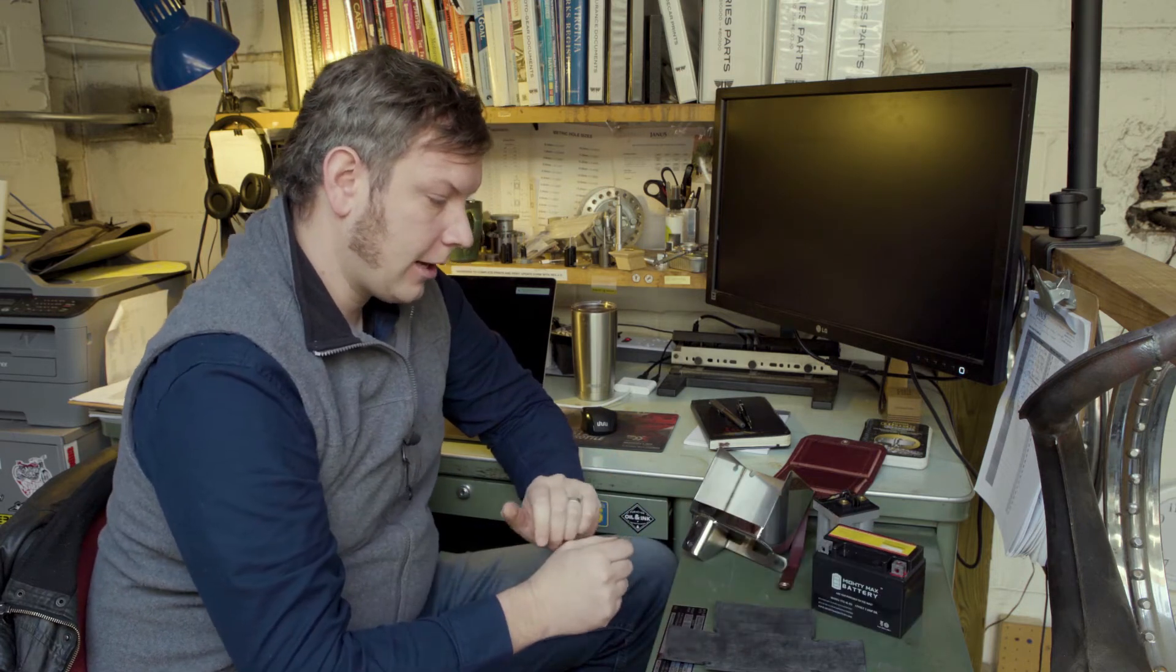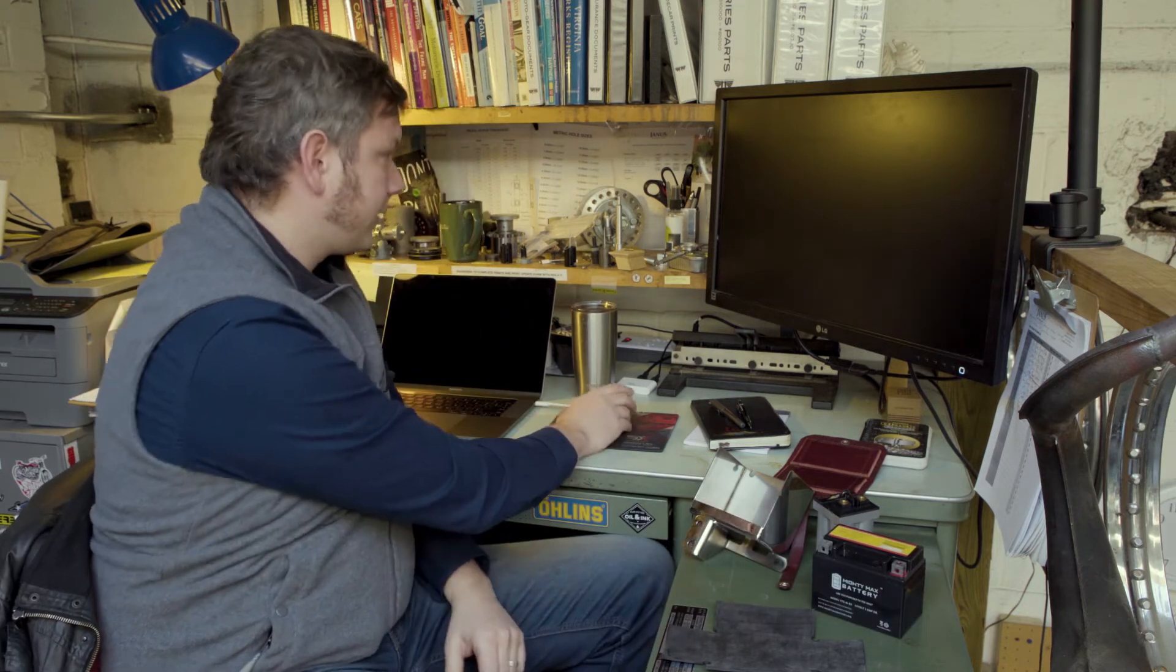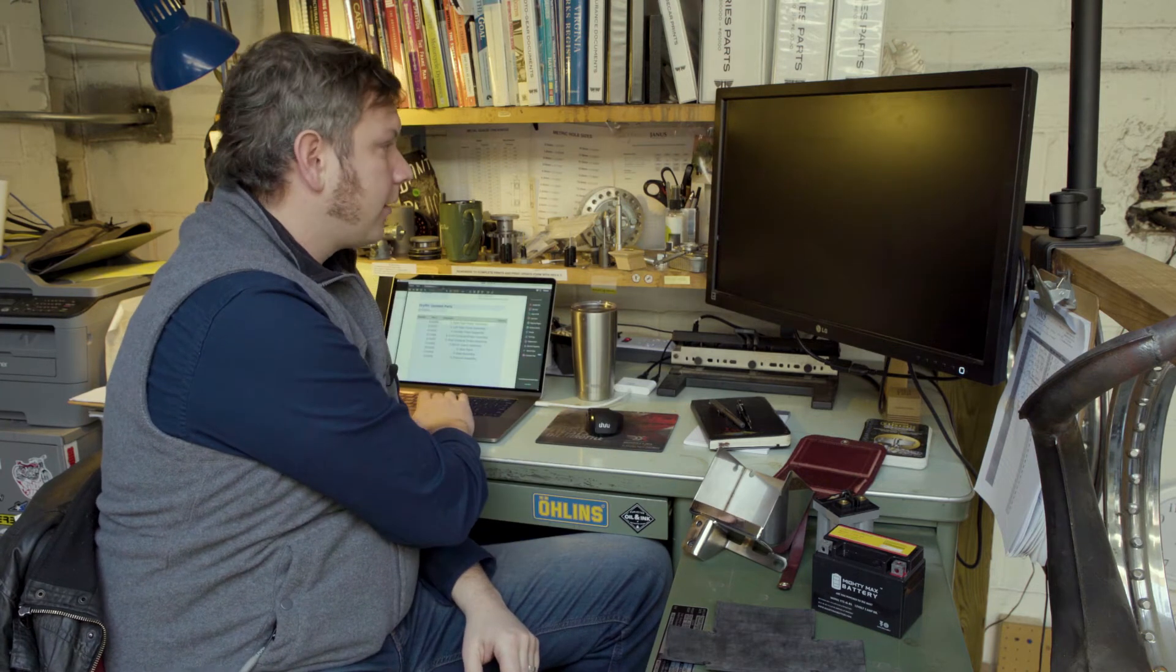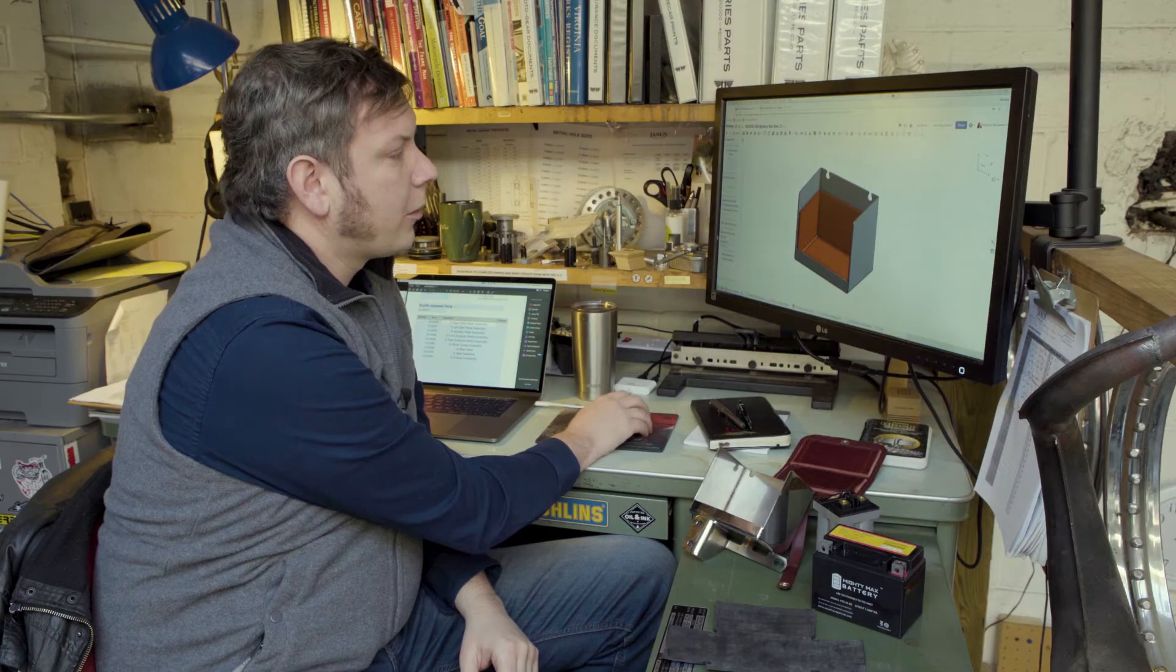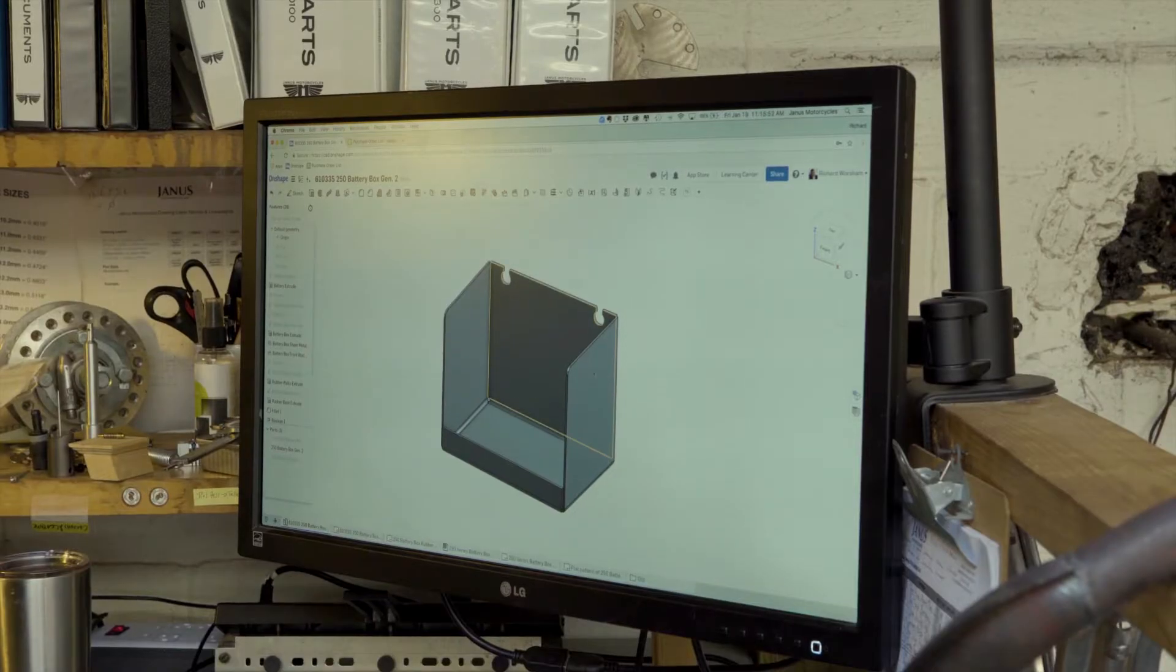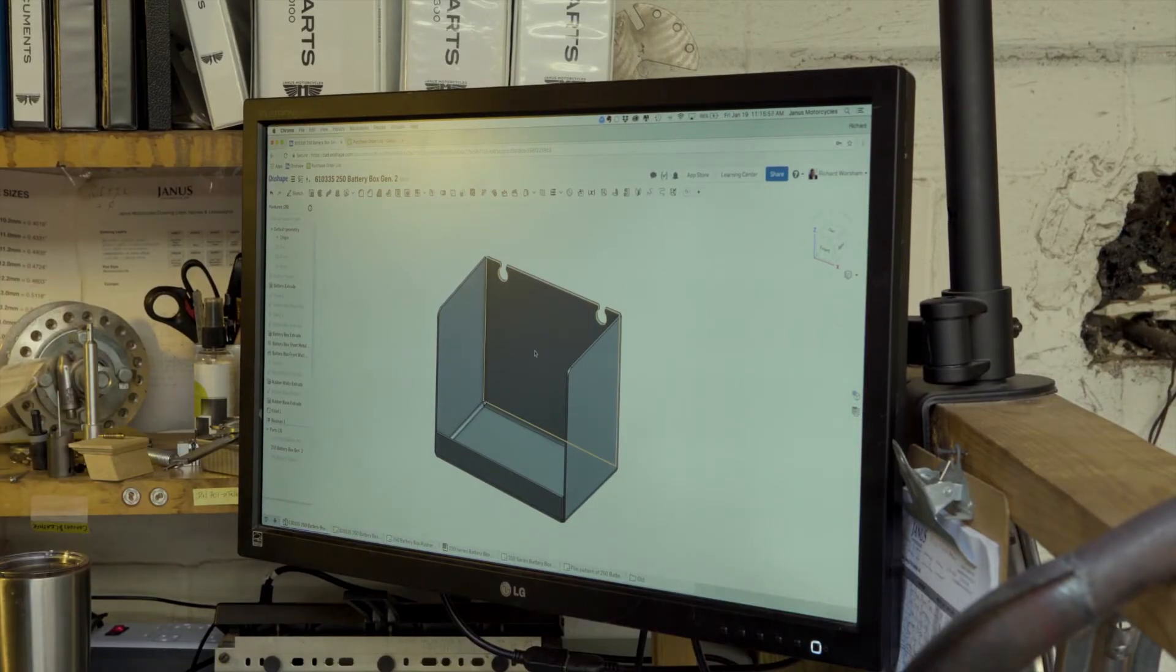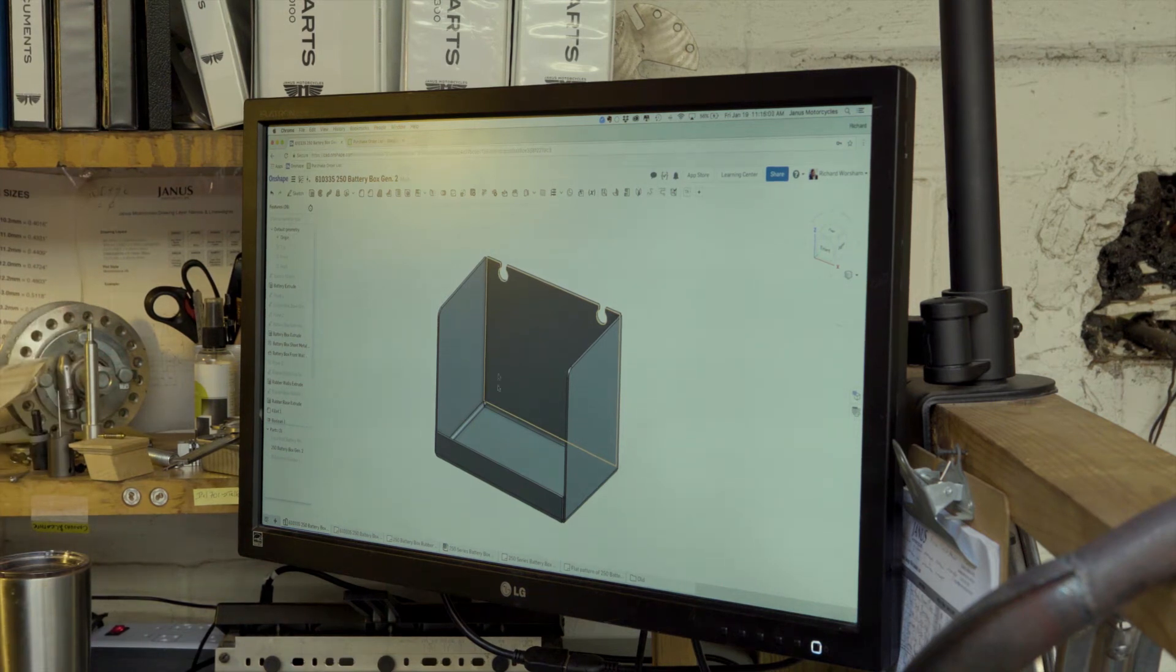So without further ado, we'll talk a little bit about the design of this new battery box. This is one that we were able to model almost completely in 3D before building. So here's the battery box built around the specific battery that we wanted. It also has the constraints of the size of the space on the bike that it could get into.